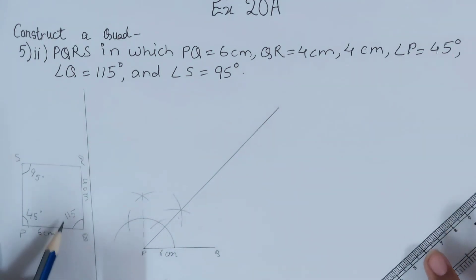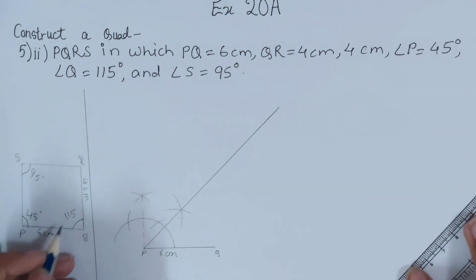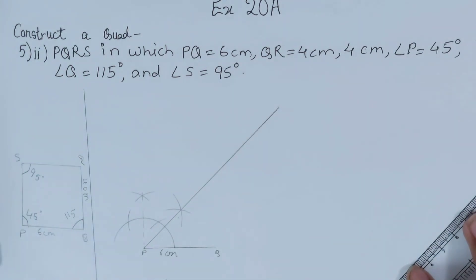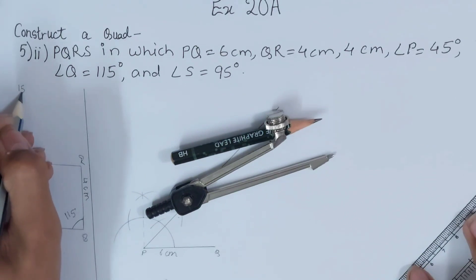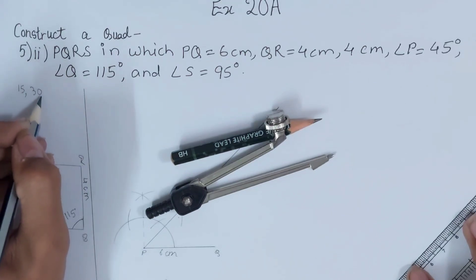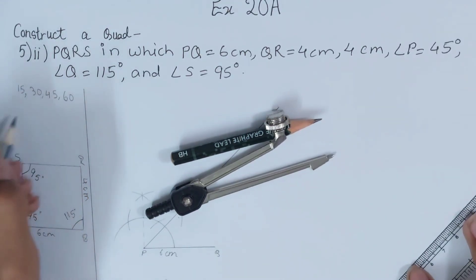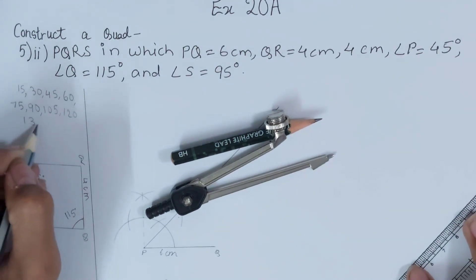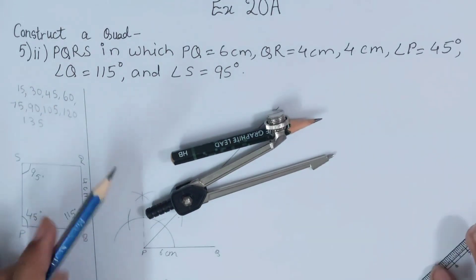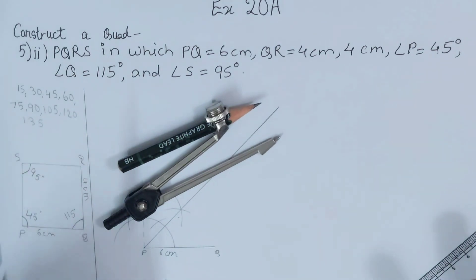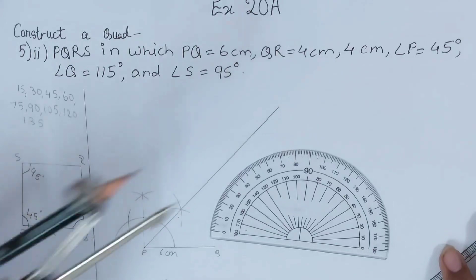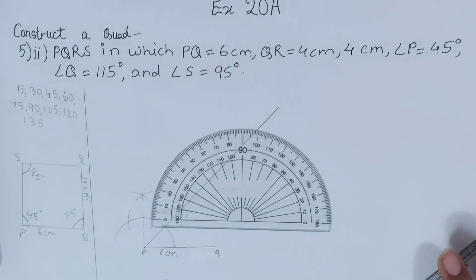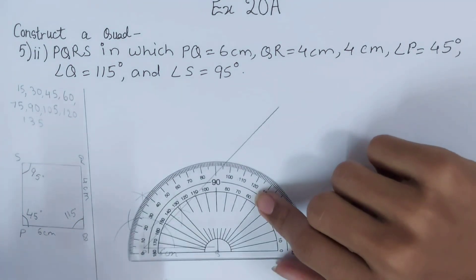115 degrees — we know we can only make angles using a compass that are multiples of 15, like 15, 30, 45, 60, 75, 90, 105, 120, 135, and so on. For angles that are not a multiple of 15, we will use the protractor from the geometry box. So I will use the protractor and keep it at point Q.